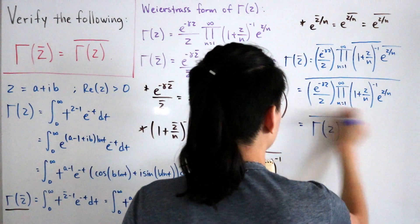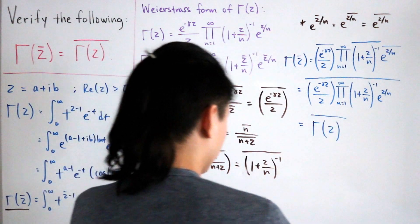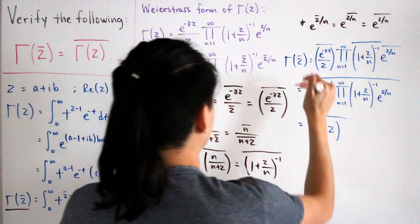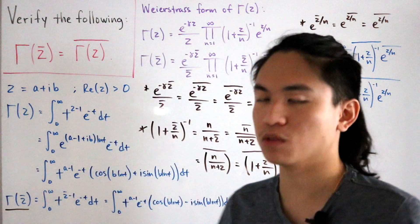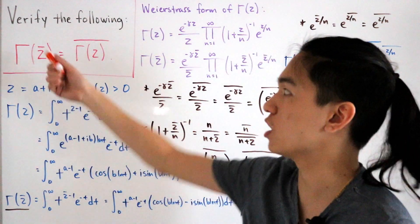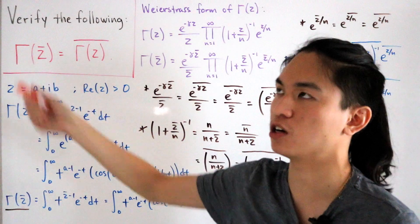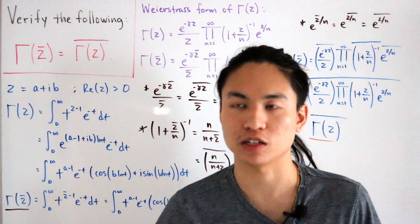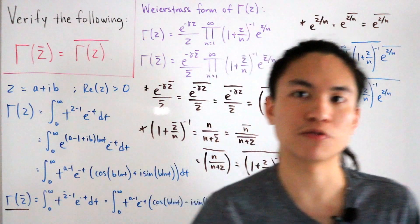And just like that we are done. We showed that the left-hand side equals the right-hand side using two different methods: the integral representation and the Weierstrass form. Both confirm that gamma of z-conjugate equals the conjugate of gamma(z) for a complex number z. Pretty cool!